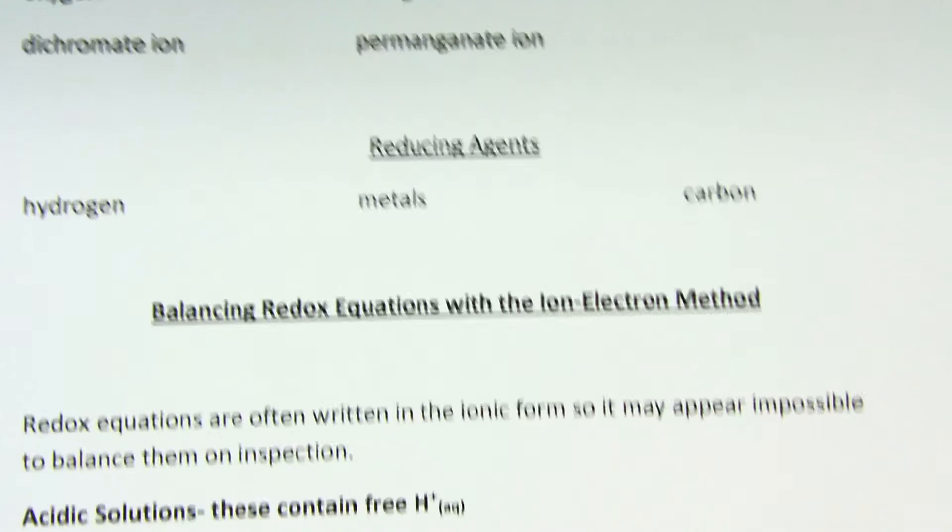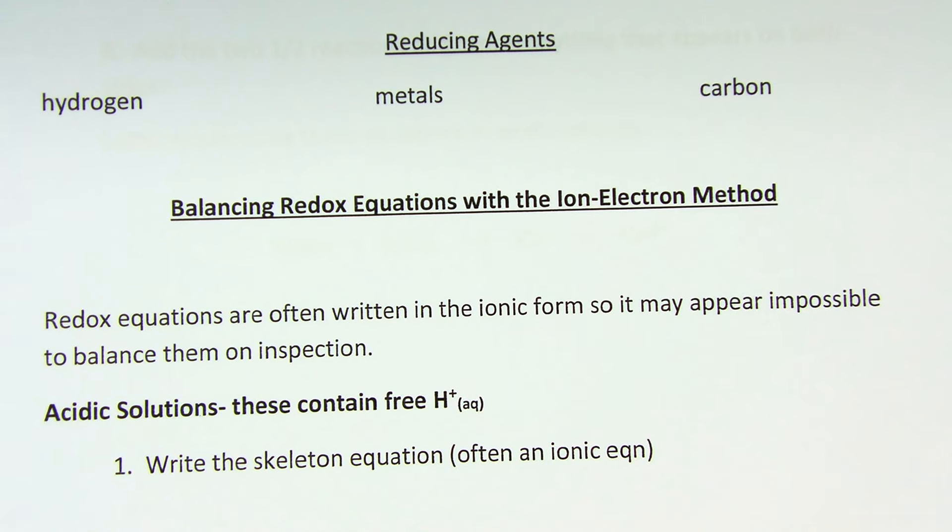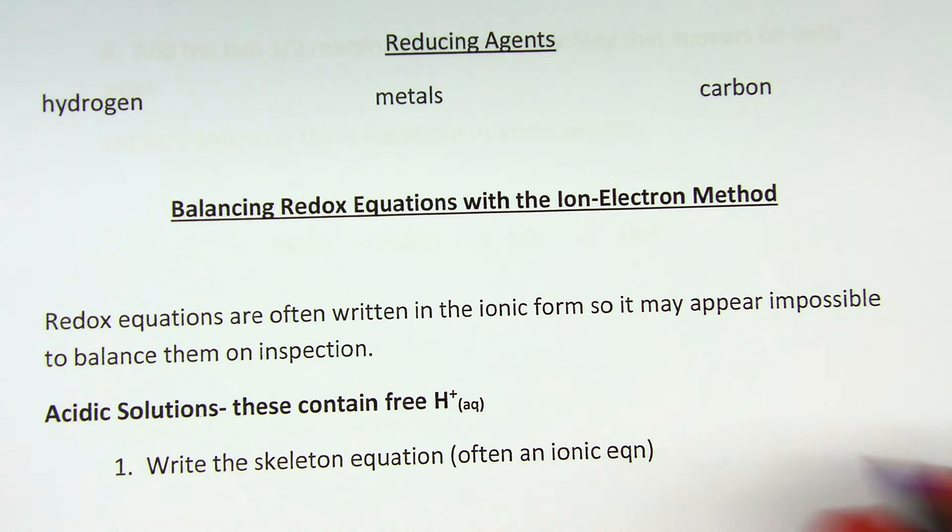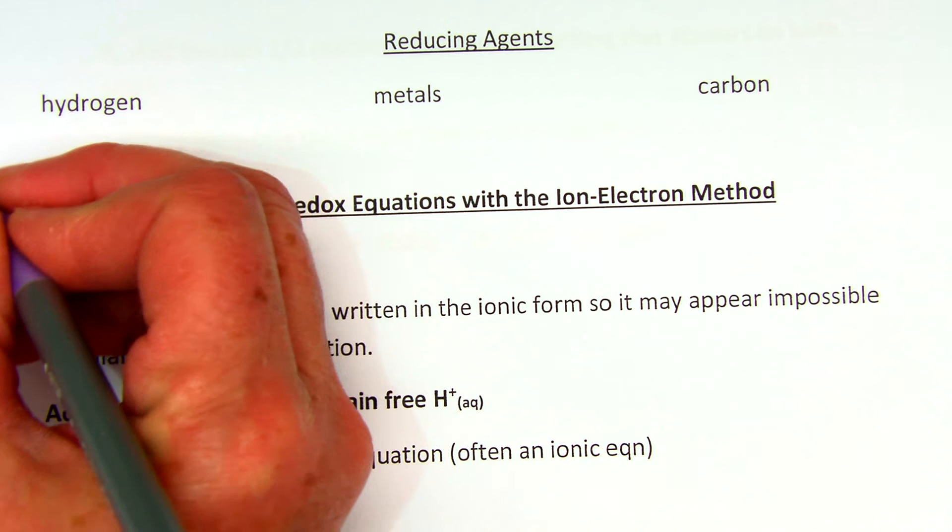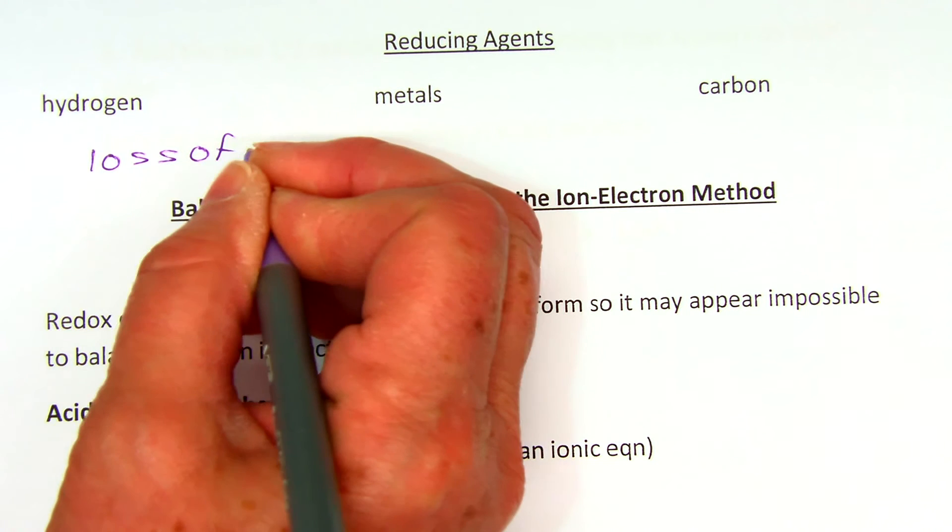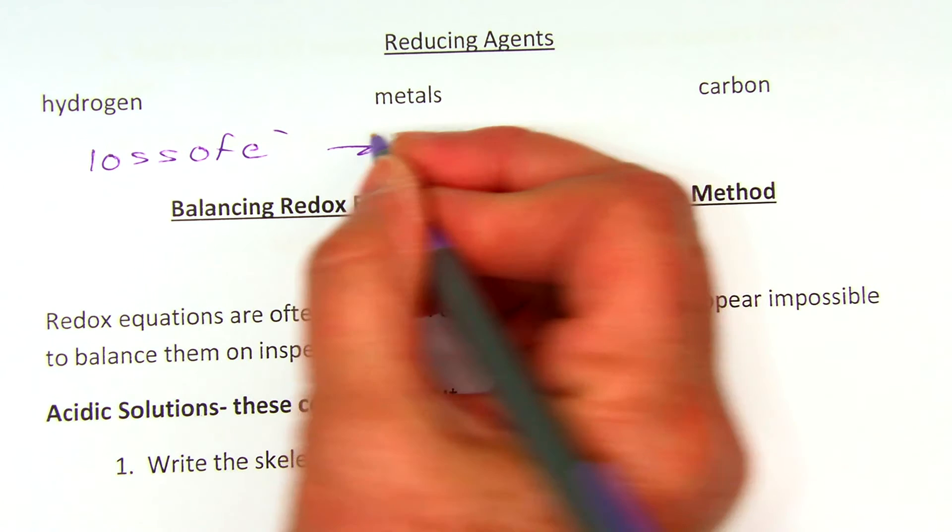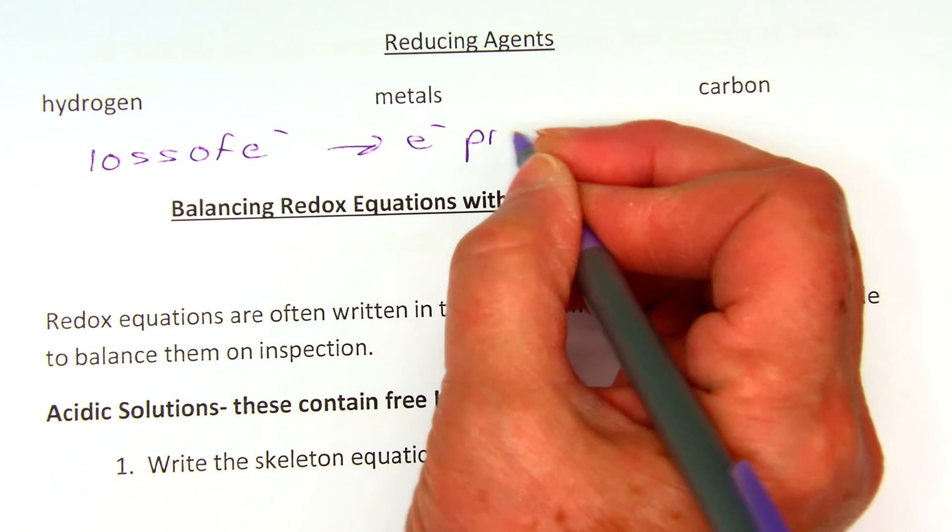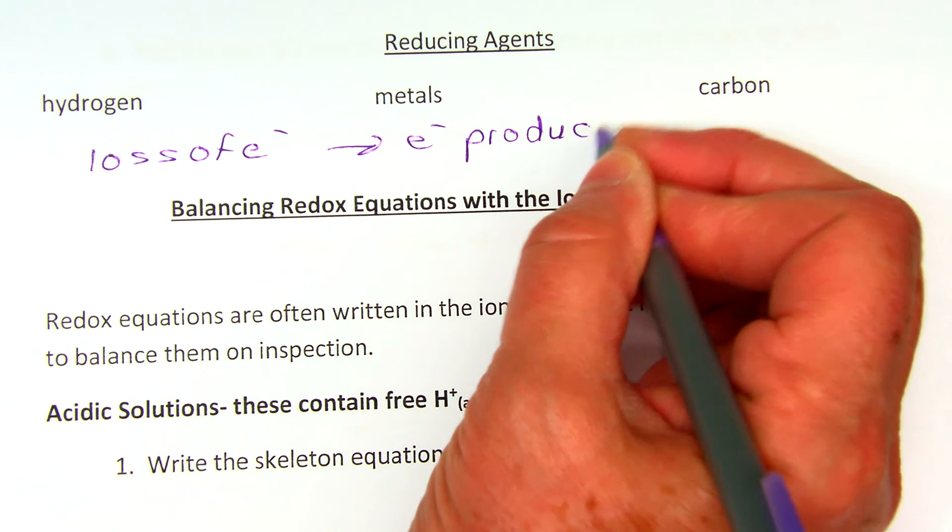Now we're going to look at the other way to recognize redox, which is to think about electrons being gained and electrons being lost. We said that oxidation was loss of electrons, and if we're losing electrons that means the electrons are a product in the reaction, or they're on the right-hand side, the product side.